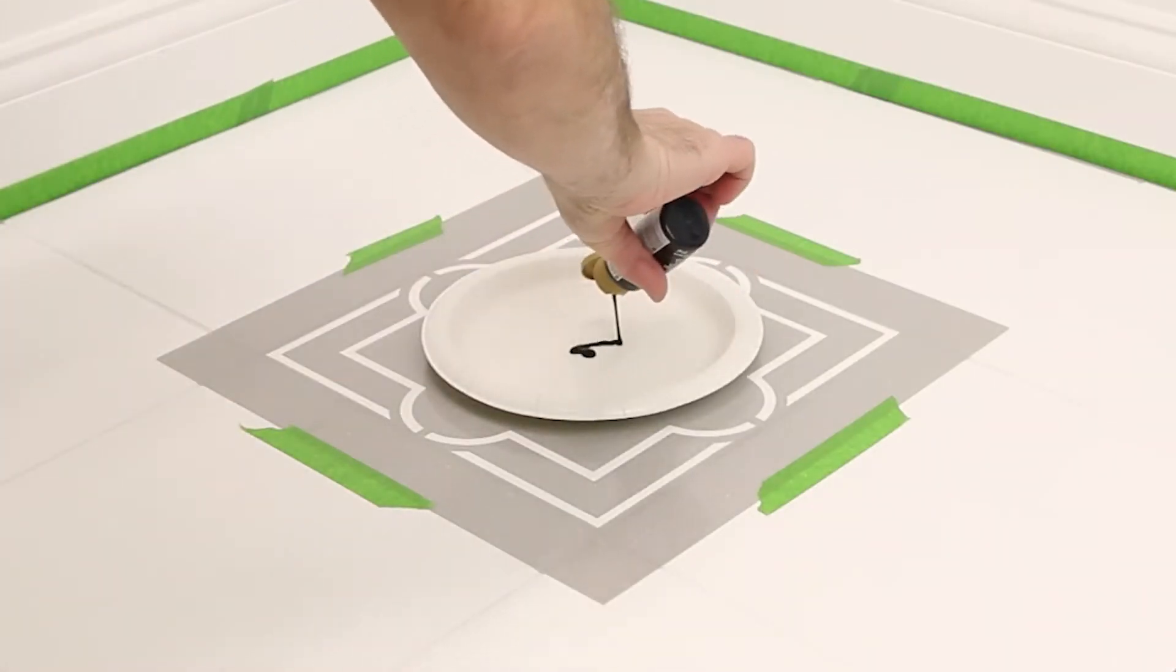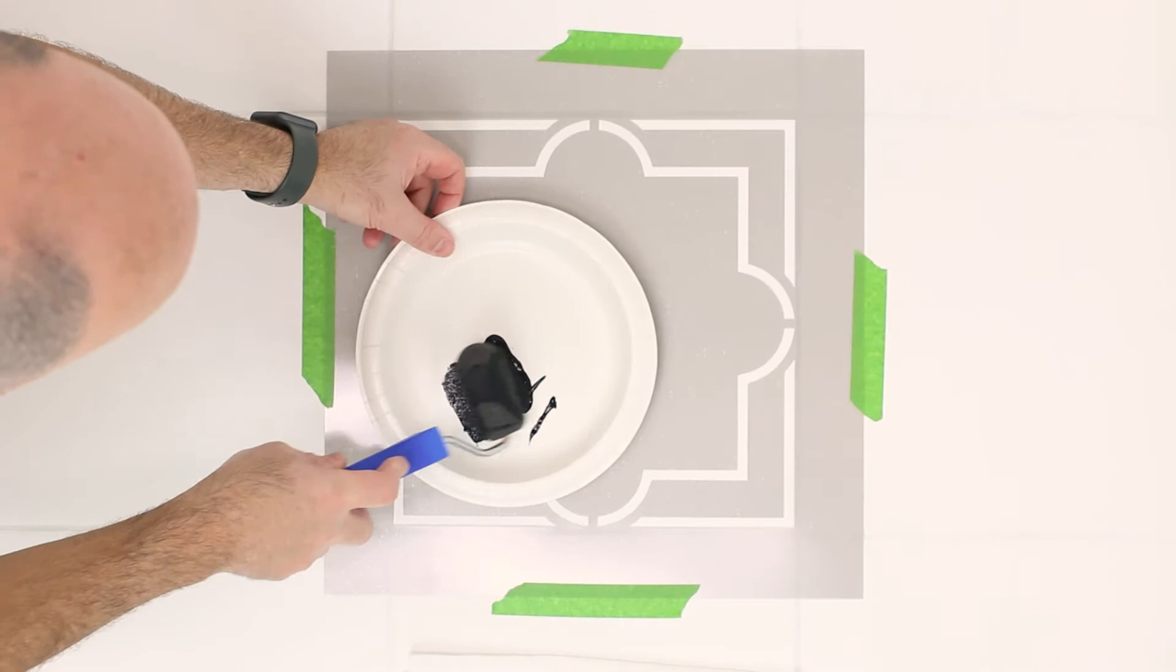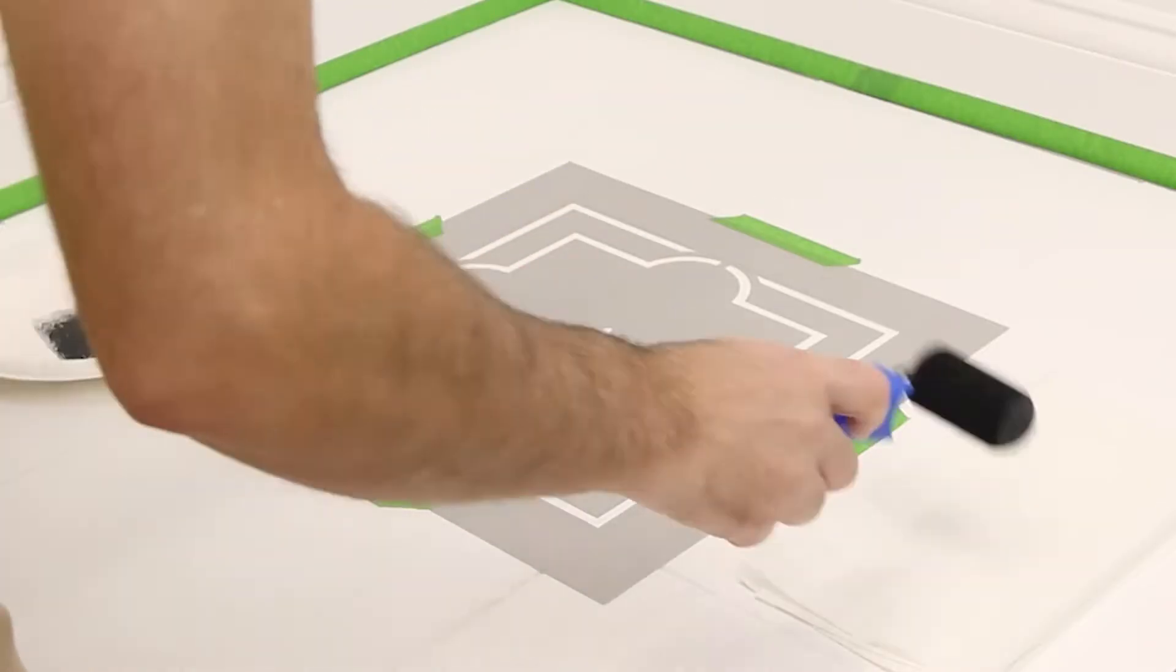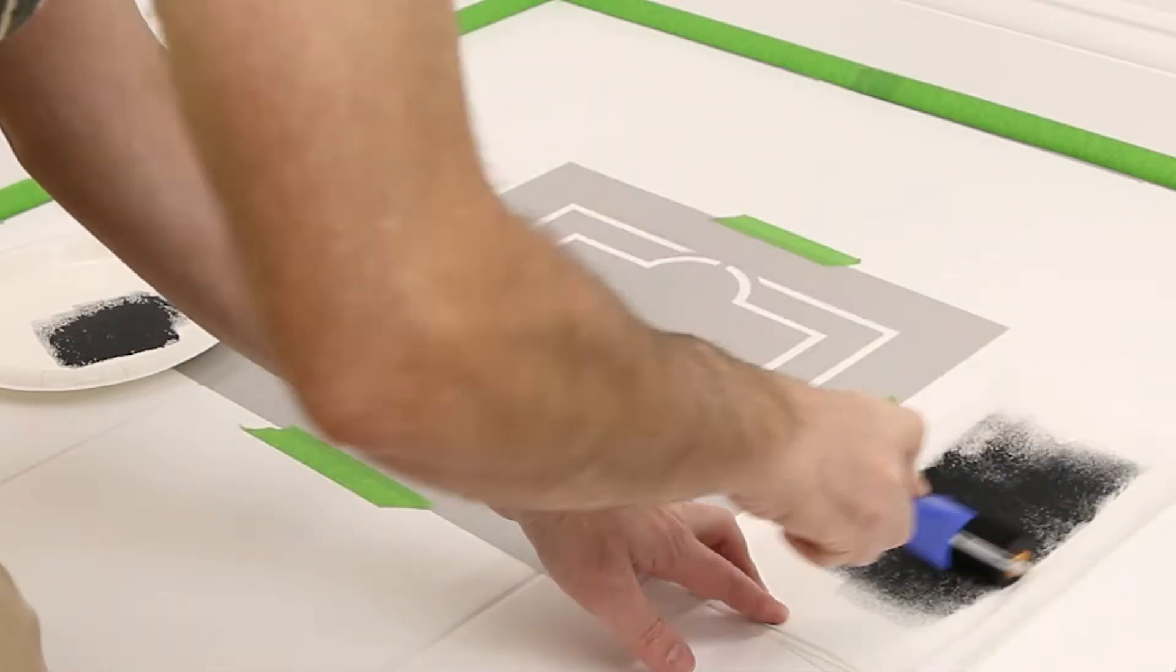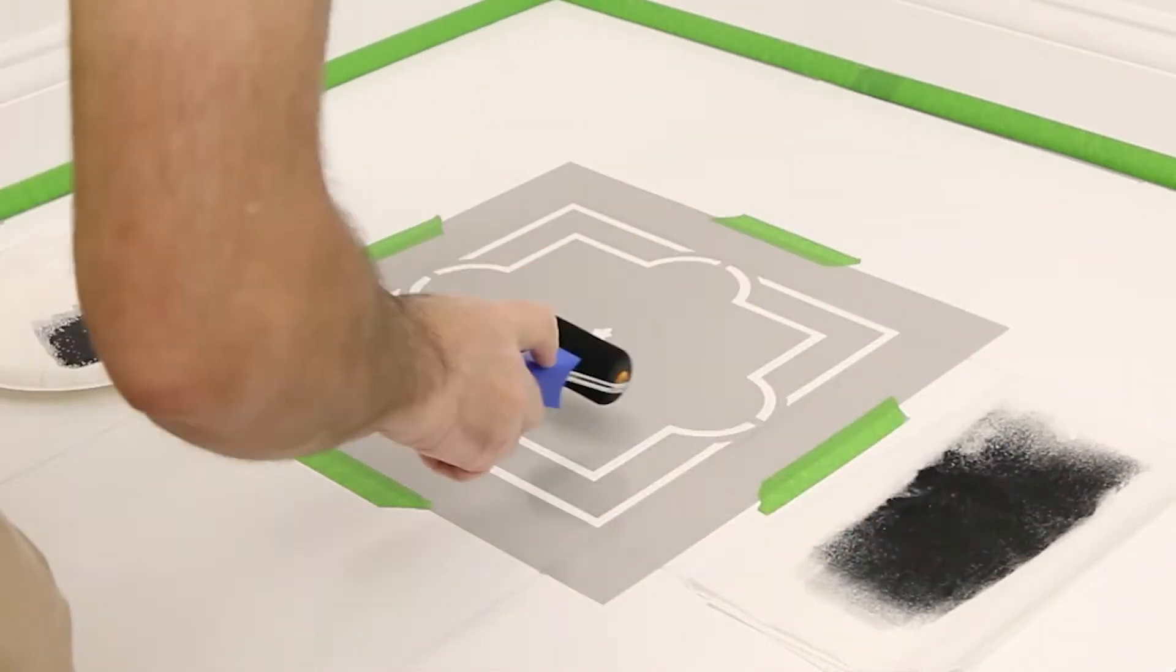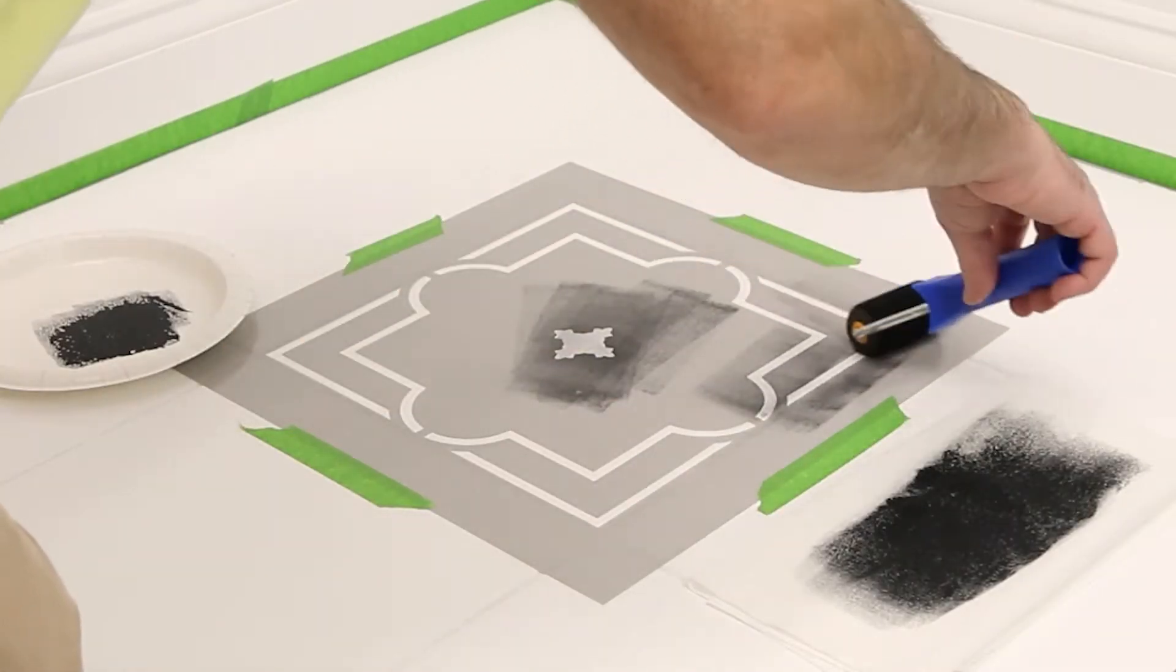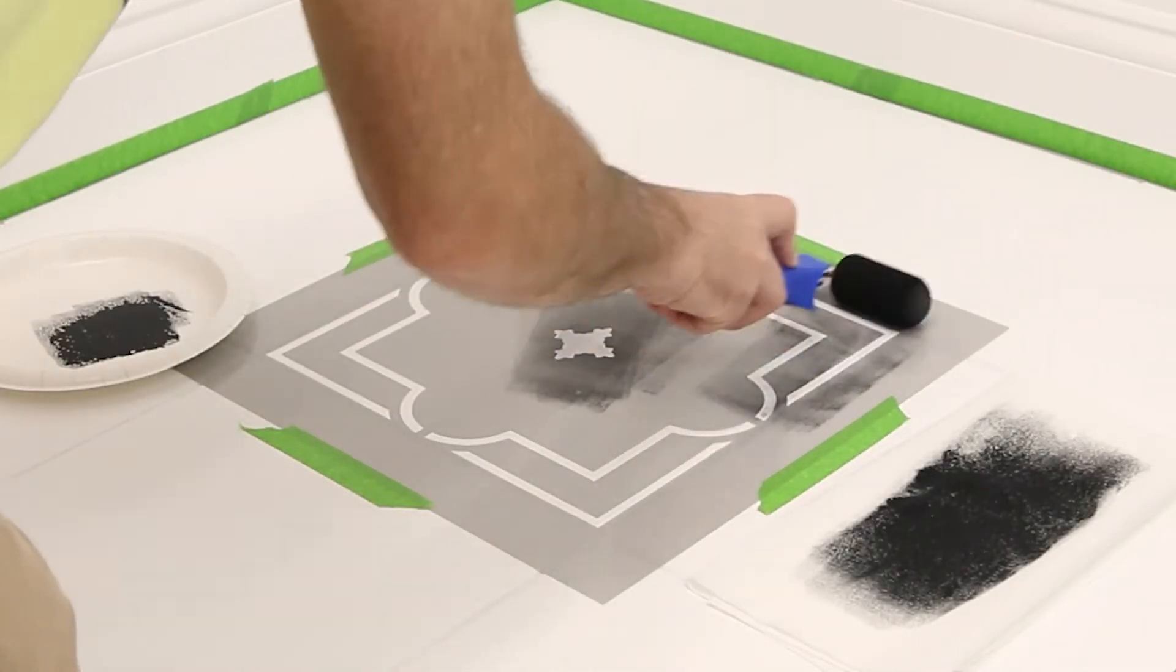Shake your bottle of black Americana acrylic paint prior to pouring out a small amount onto a paper plate. Evenly soak the high density foam roller with paint, then remove excess paint by rolling it on a stack of paper towels. The roller should be barely wet. Too much paint will result in bleeding underneath the stencil.